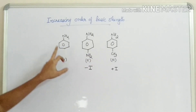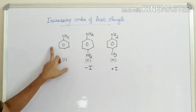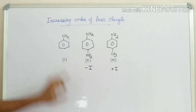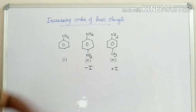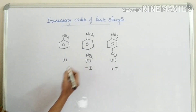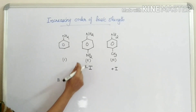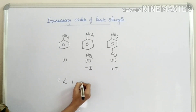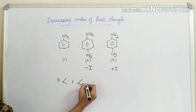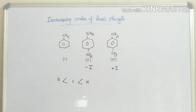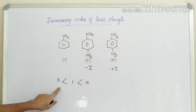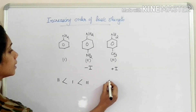If you have a CH3 group, it donates electrons, making the compound more basic. If you have 3 CH3 groups, it will be even more basic. If you have an option here, then the answer will be B.